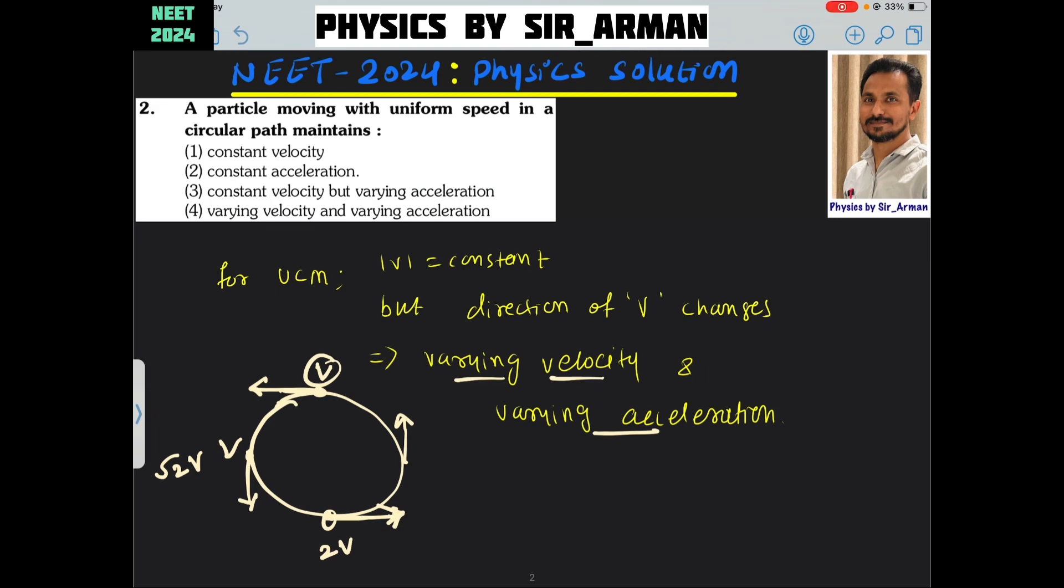The velocity changes as the velocity is not changing uniformly. That is why the acceleration is varying. Whenever we can say constant acceleration, whenever the velocity is changing at uniform rate, but here velocity is not changing at uniform rate. And hence, we can say that the motion is varying velocity with varying acceleration.